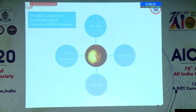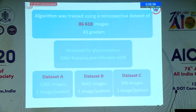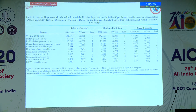The input given to this algorithm was a single fundus photograph resized to 587x587 resolution, and it could determine whether this is referable glaucoma — classifying the disc picture as no risk, low risk, high risk, or likely glaucoma. It could also pick up the presence or absence of the optic nerve head features discussed. The algorithm was trained using a retrospective dataset of 86,000 images and then assessed on datasets A, B, and C. The area under the curve was impressive: dataset A was 0.945, dataset B was 0.85, and dataset C was 0.88. The model's key predictors included vertical CDR ratio, notch, and RNFL defect.